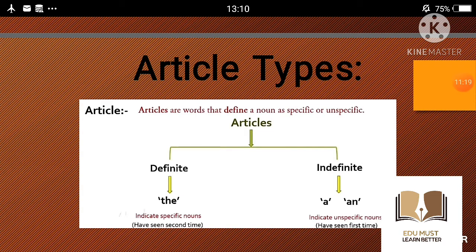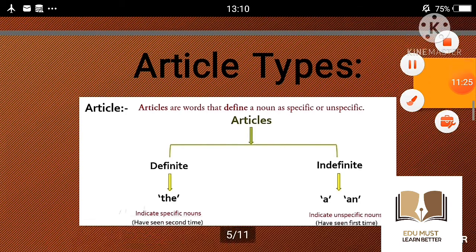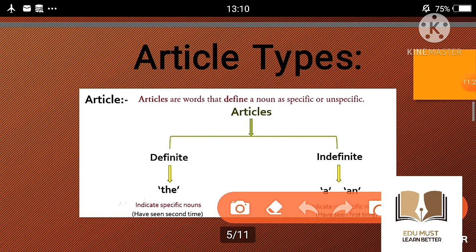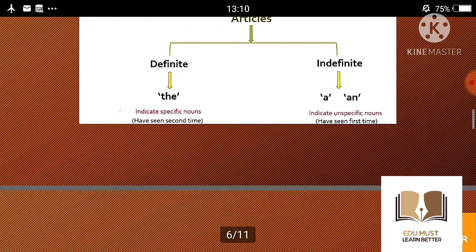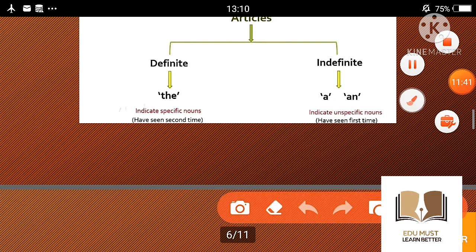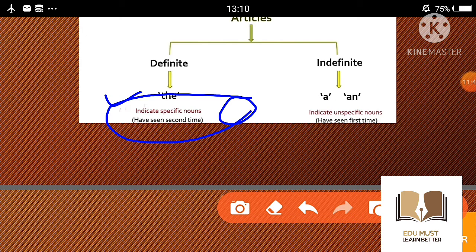'A football match' में ऐसा नहीं है कि उसको वही वाला देखना है — कोई भी match चलेगा, तो वो एक general thing की बात कर रहा है। लेकिन second sentence में 'the football match' use करके उसने specific कर दिया। Article के types हैं: definite 'the' और indefinite 'a/an'। Definite एक specific चीज को बताता है और indefinite unspecific noun को indicate करता है।